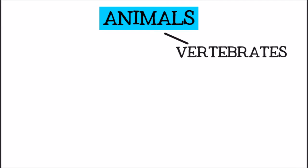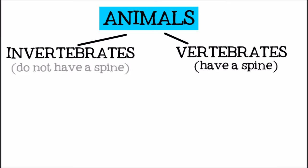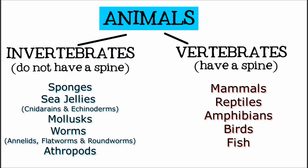The two largest groups of animals are vertebrates and invertebrates. Vertebrates are animals that have spines or backbones. Invertebrates are animals that do not have backbones. Most of the animals in the world are invertebrates.